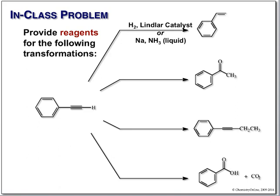Our next target is a ketone. I know how to make ketones from alkynes by hydration via oxymercuration. We look at where the oxygen is attached: is it on the Markovnikov or anti-Markovnikov carbon? The terminal carbon is anti-Markovnikov; the benzyl position — attached to the benzene ring — is the Markovnikov position. Therefore we do Markovnikov addition of water to the triple bond using aqueous acid with a touch of mercury, forming the enol which rearranges to give the ketone.